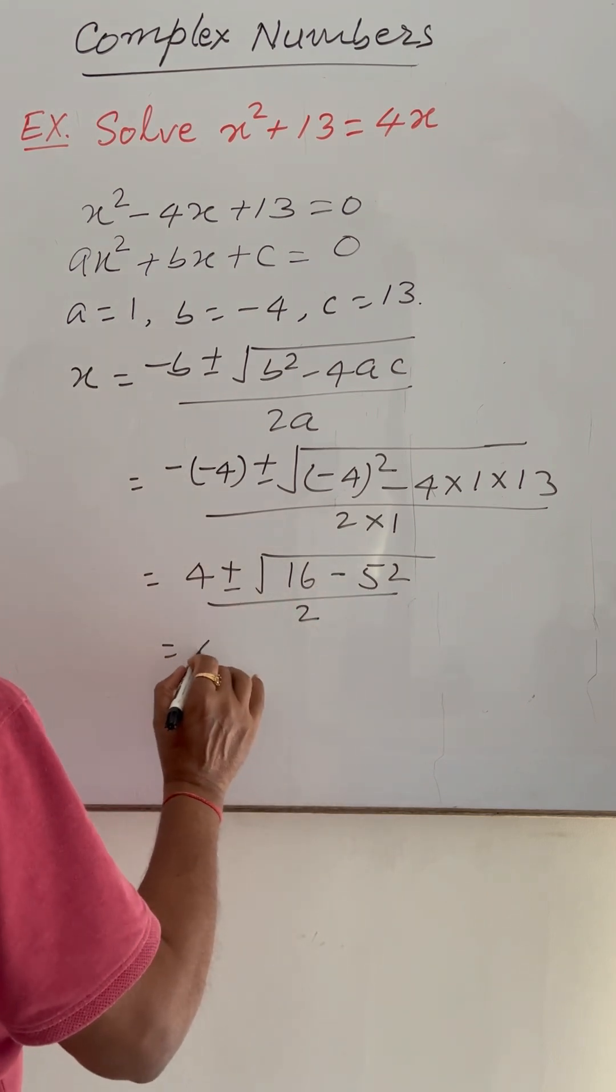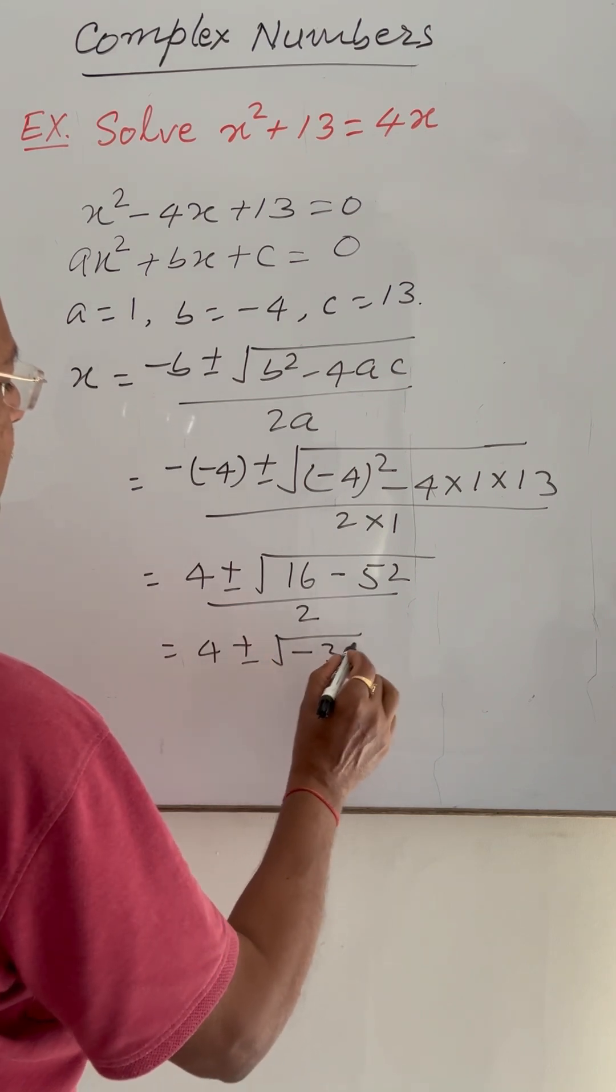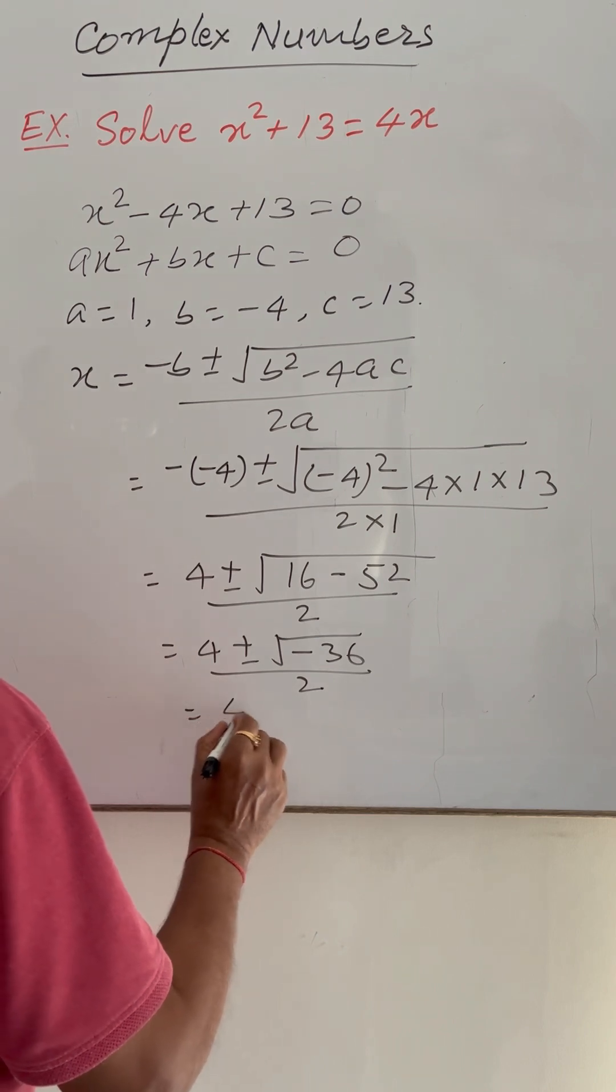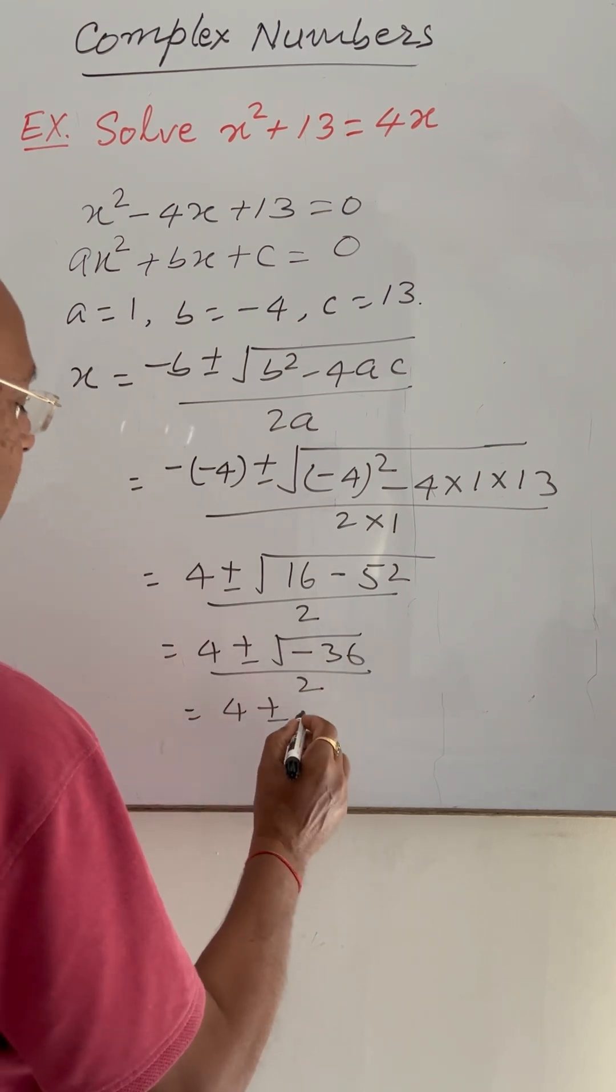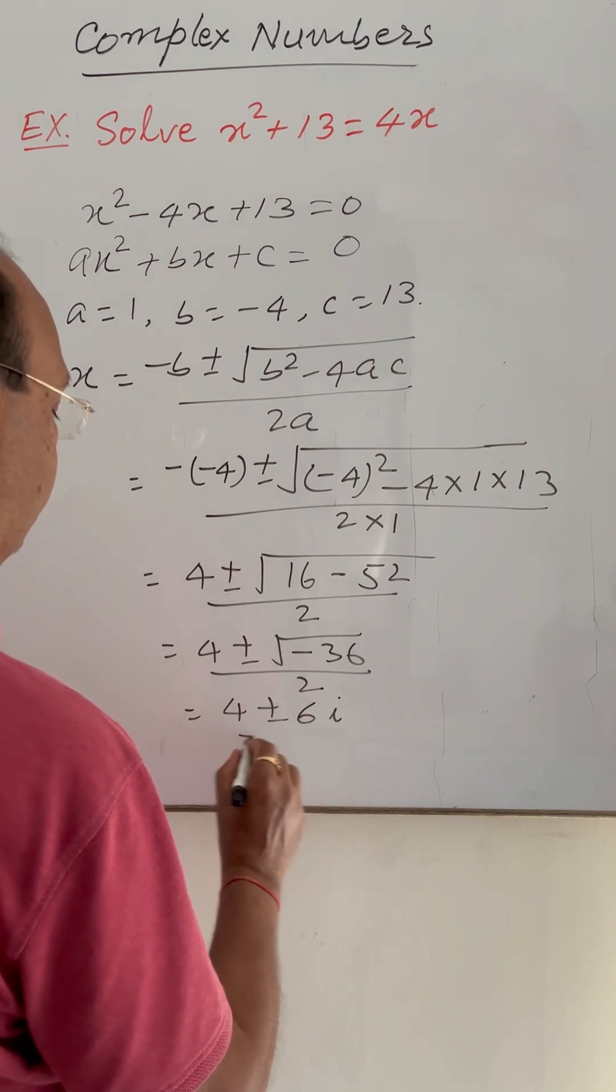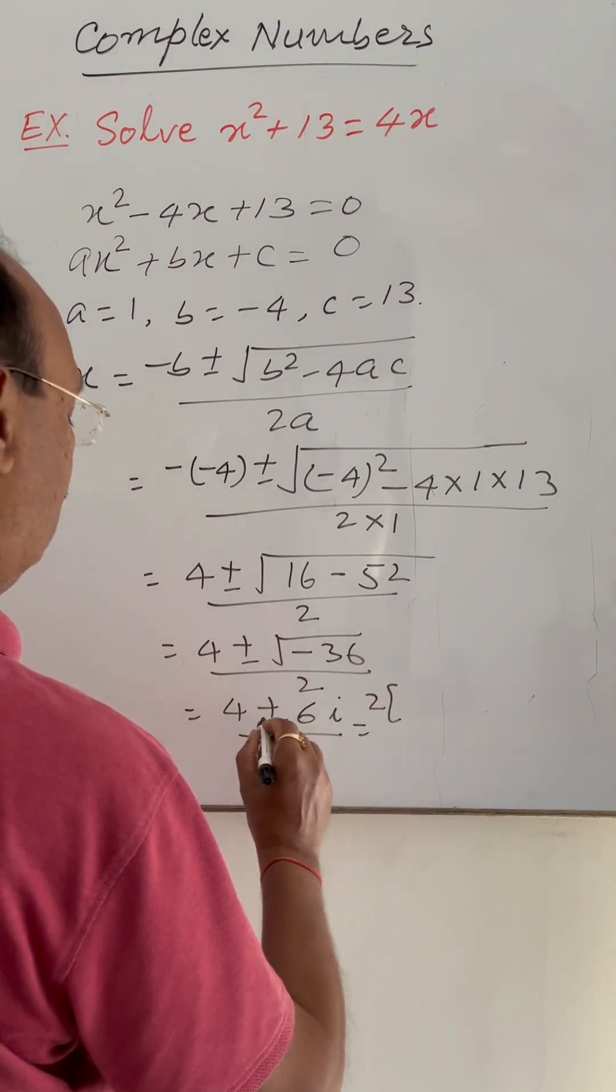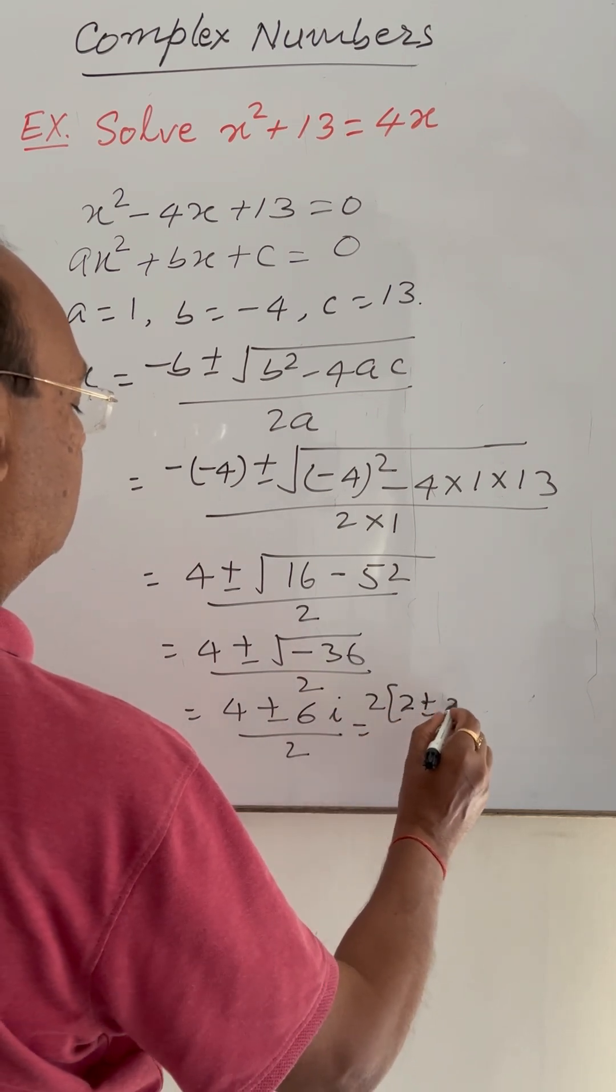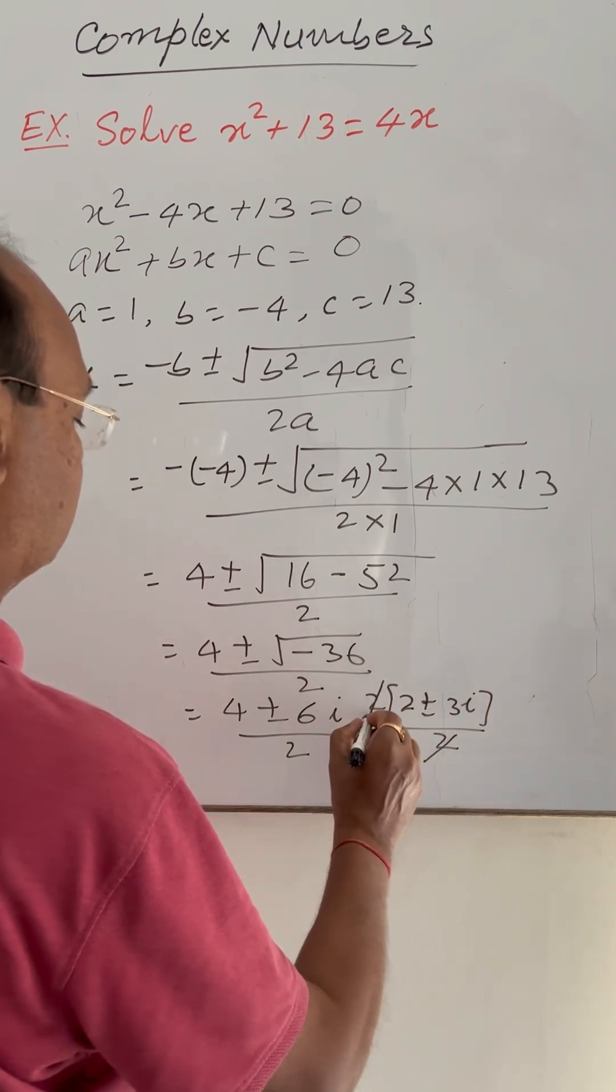And this is equal to 4 plus minus square root of minus 36 is 6i divided by 2. 2 is common here in numerator. So 2 plus minus 3i upon 2. 2 will be cancel out.